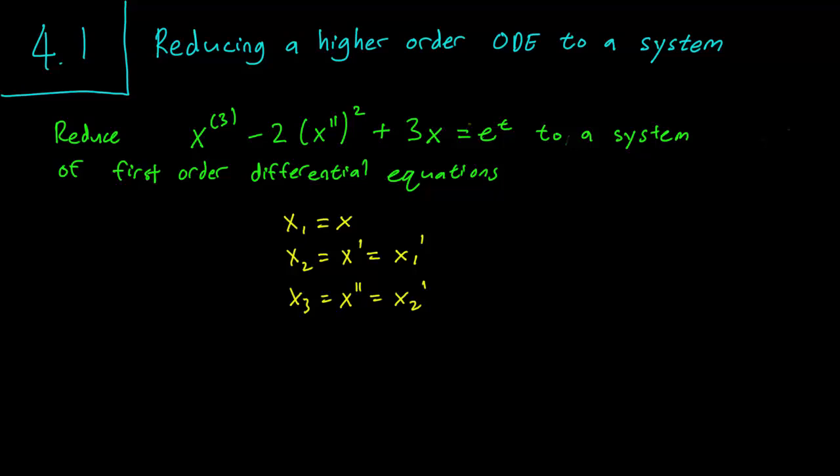you should come up with three variables, and most of the time you are going to find them this way: the three variables are going to be your three lower functions — x, x', and x''. Note that we don't have an x''' here; we stop at this point. Remember that for an order three equation, we have three variables. So x1, x2, x3 are all going to be functions of t. Now let's write down a differential system.